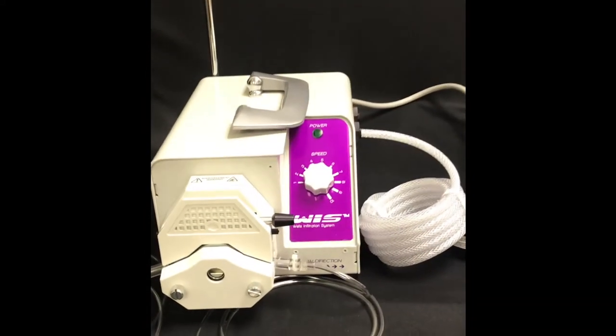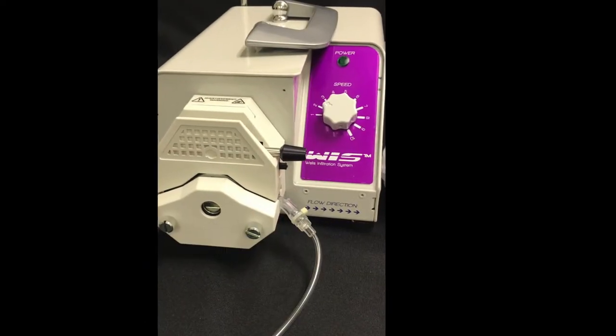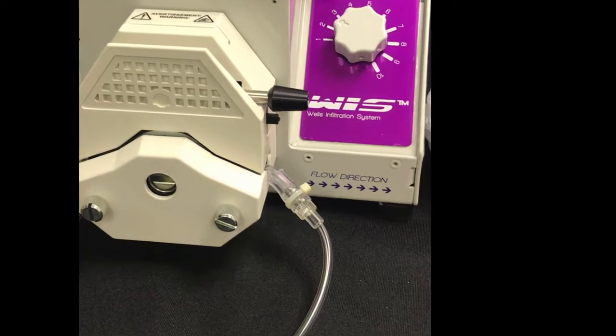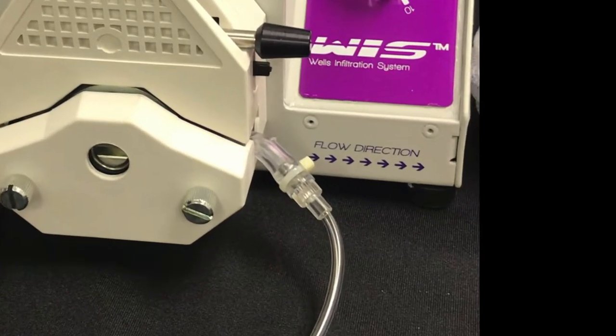Rotate the pump head lever clockwise to close the pump head and clamp the tubing. The flow direction arrow on the infusion system indicates how the tubing should be inserted into the unit.